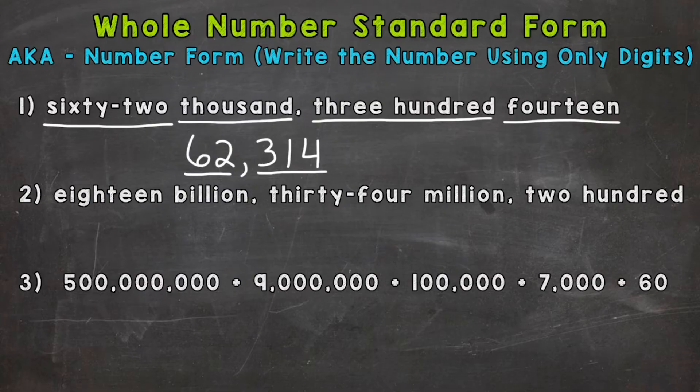On to number two, where we have a larger number. We're going to step it up a notch. We have 18,034,200. Let's start with this 18 and write it out.